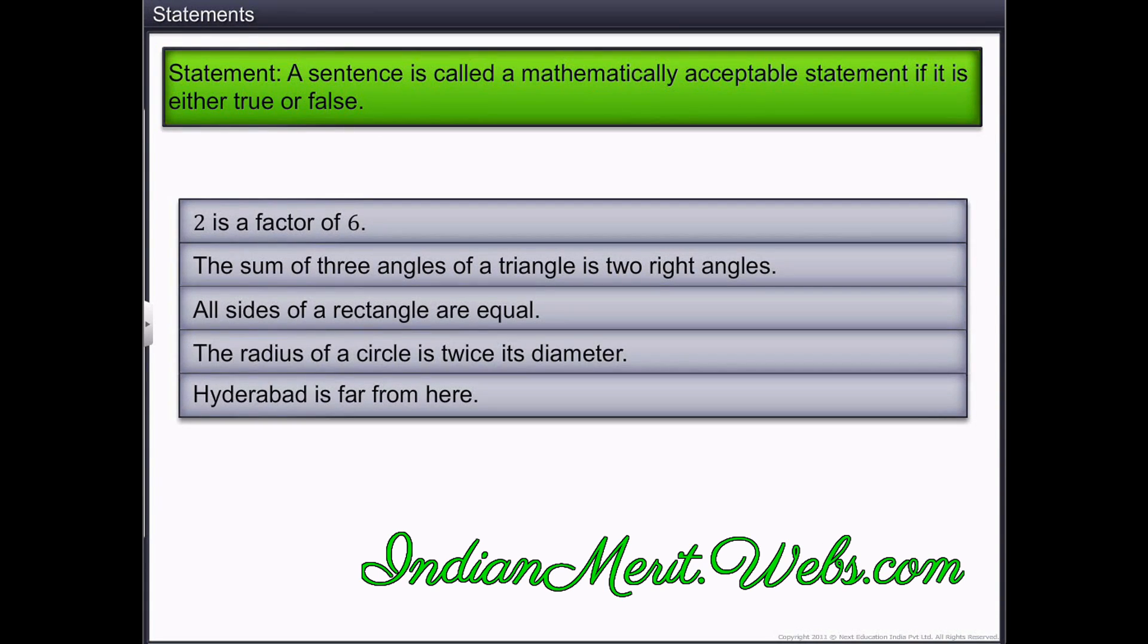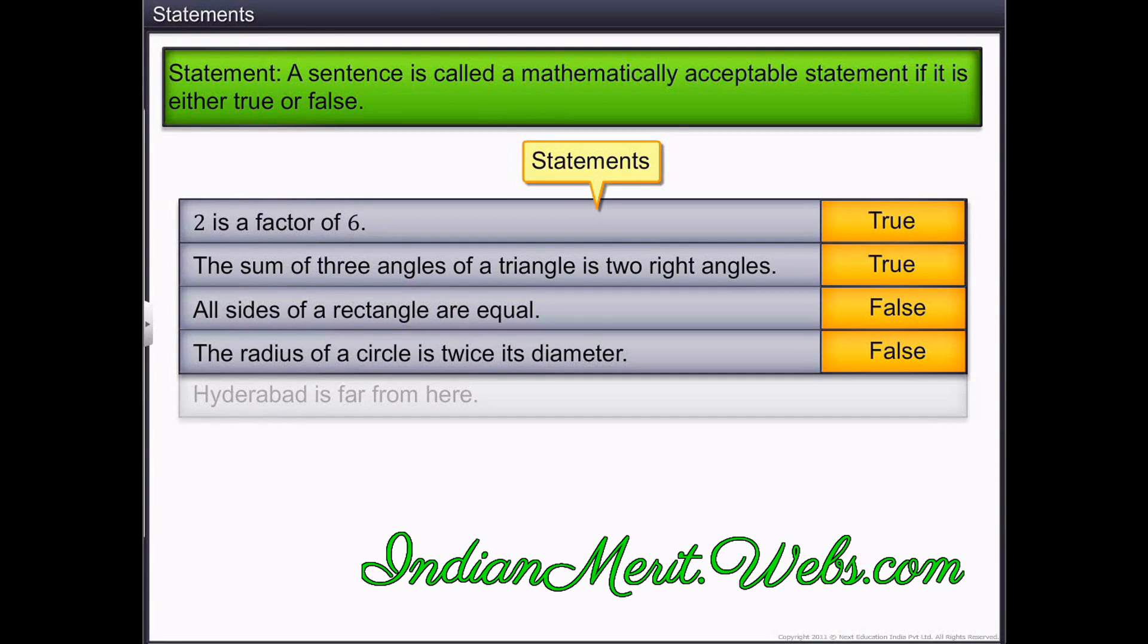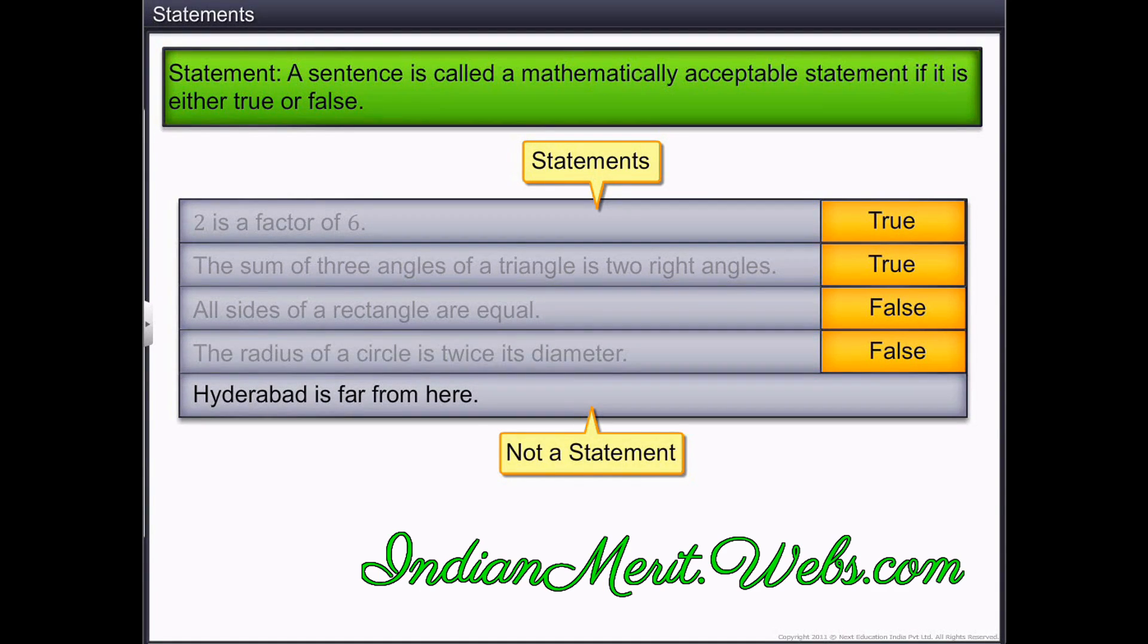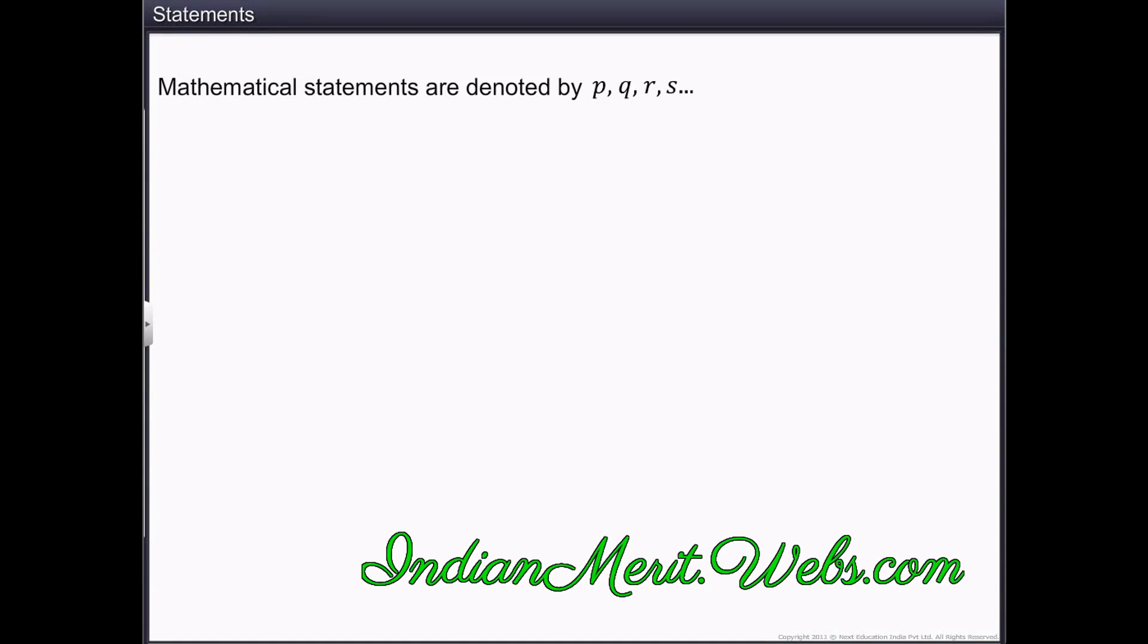Let's look at more sentences and justify their truth values. In these sentences, the first two sentences are true while the third and fourth sentences are false. In the last sentence, it is not certain to say how far Hyderabad is from another place unless it is mentioned. Therefore, the first four sentences are statements. Hyderabad's distance is different from different places. Thus, this sentence is not a statement.